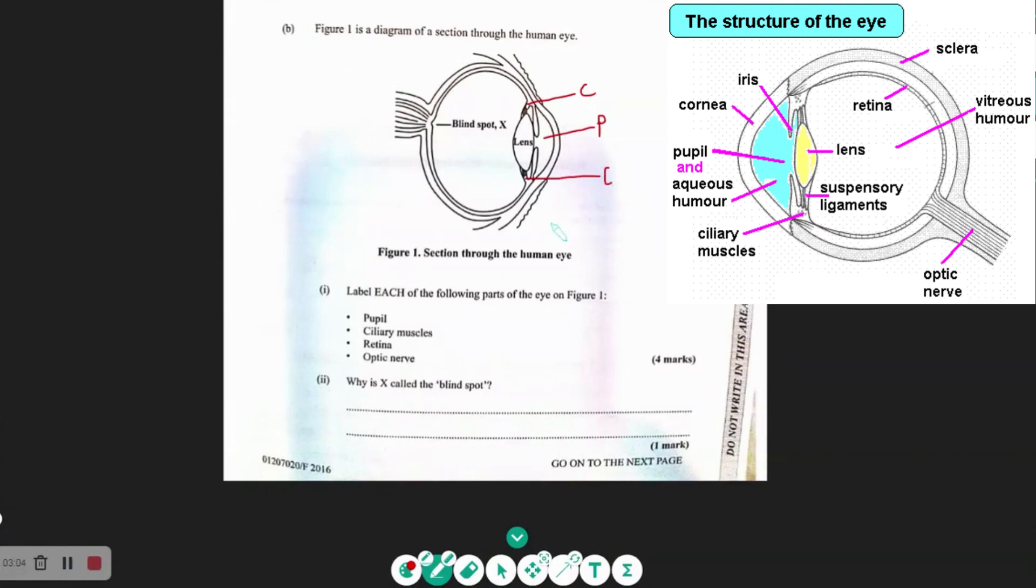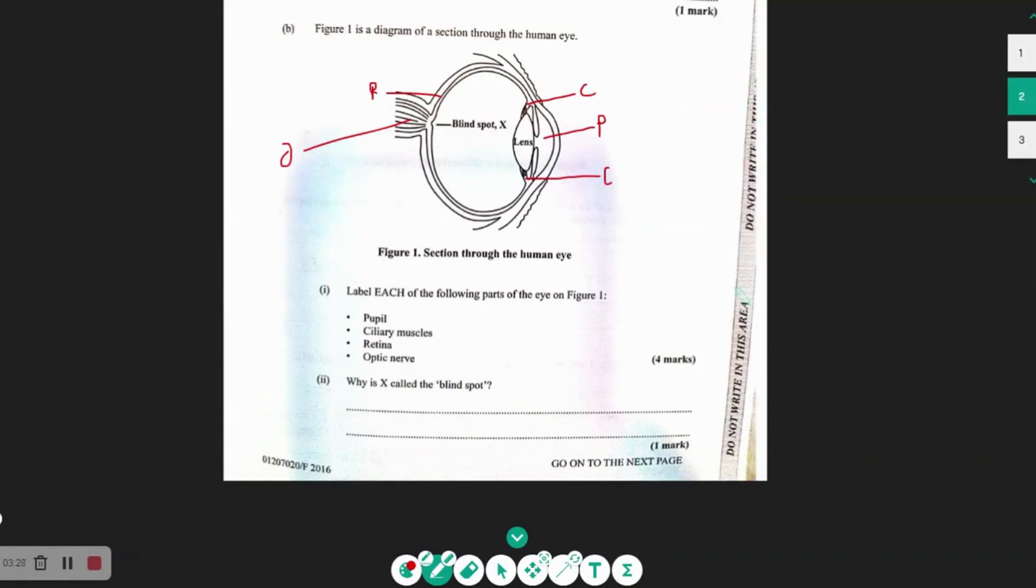Where's the retina? The retina would be to the back. So we label the retina here, right? And finally, where is the optic nerve? This would be the optic nerve here. So this is the optic nerve. And I put R here for the retina. So simple enough. That would be our four marks.